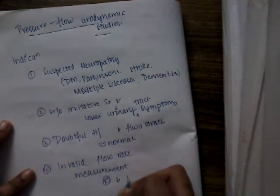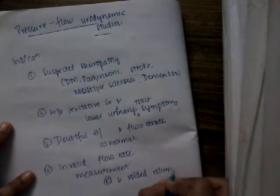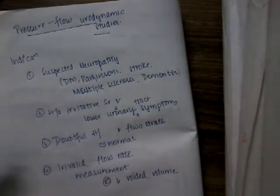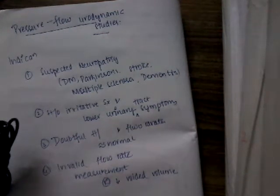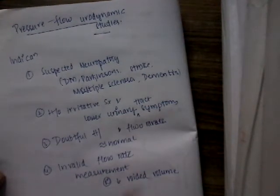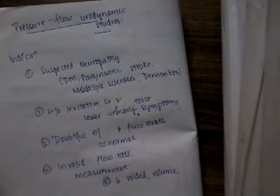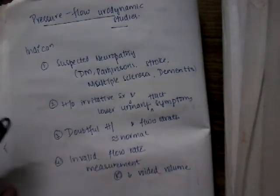Why? Because the reason is low voided volume. Whenever there is very low voided volume, we don't know how much flow rate it is because at least we should have 200 milliliters of voided volume to know whether there is adequate flow rate or not. In those situations we do these pressure flow urodynamic studies.